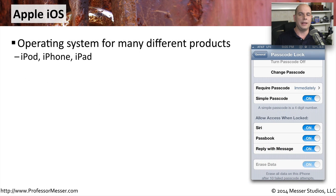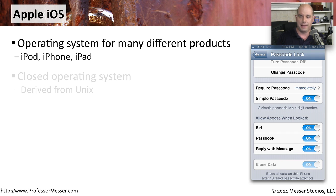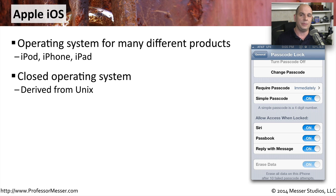A popular mobile operating system is one from Apple called iOS. iOS is an operating system that works across many Apple products such as iPods, iPhones, and iPads. This is definitely a closed operating system. You don't have access to change anything in the OS, and you can't make updates to the operating system independently. All the updates and all of the changes to the operating system come directly from Apple.